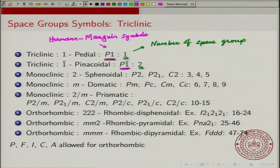For example, you do not have a C-centered case where the two axis is a screw axis. These are not arbitrary — you cannot have arbitrary symmetry operations. These have to satisfy the lattice condition.